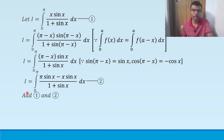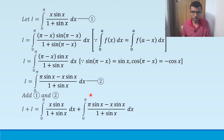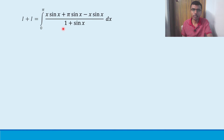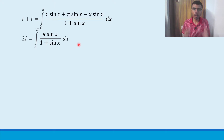On the left-hand side, I + I = 2I. On the right-hand side, I combine both integrals since the limits are the same and the denominators are also the same. So I add the numerators: x·sin(x) + π·sin(x) - x·sin(x). The x·sin(x) terms cancel out, leaving 2I = integral from 0 to π of π·sin(x) / (1 + sin(x)) dx.